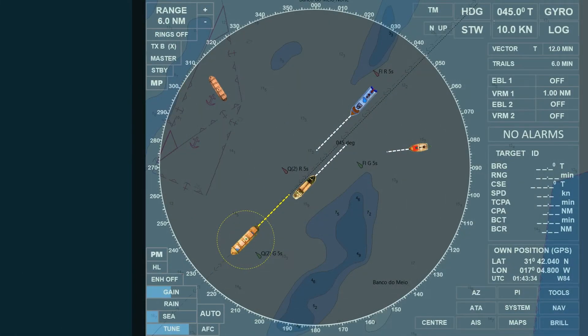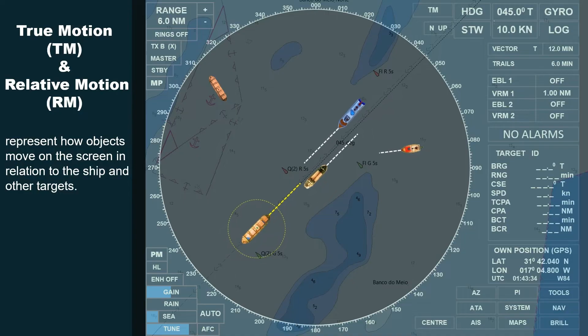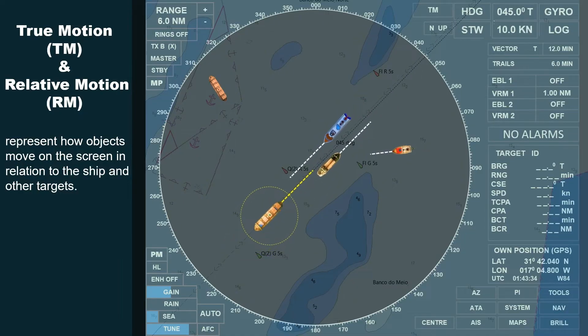In radar display, true motion and relative motion represent how objects move on the screen in relation to the ship and other targets.